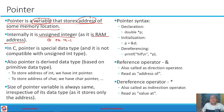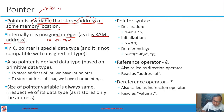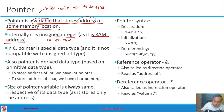How much size does a pointer need? It is equal to how large an address you have. If you are working on a 32-bit platform with a 32-bit compiler, the pointer size will be 4 bytes. If you are working on a 64-bit compiler, the size of the pointer will be 8 bytes.